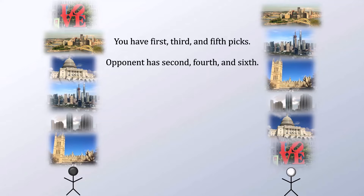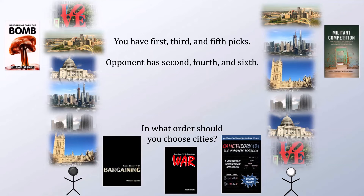Here's the puzzle: in what order should you draft these cities? Your hint for today is to apply backward induction to the problem — a topic covered in Chapter 2 of Game Theory 101: The Complete Textbook. In essence, you should think about how the end of the draft will play out and use that information to inform what your earlier picks should be.